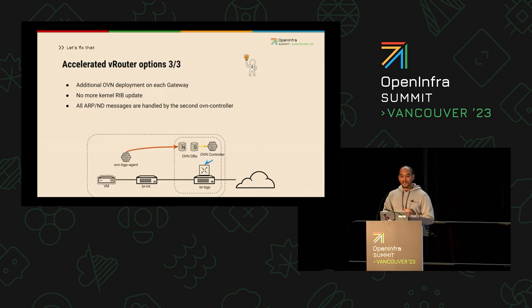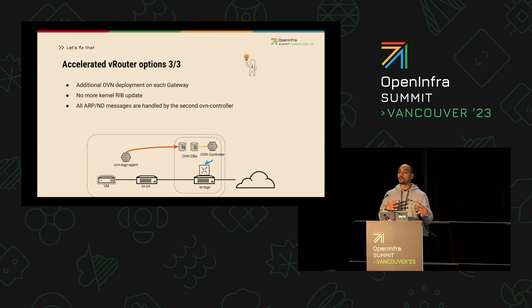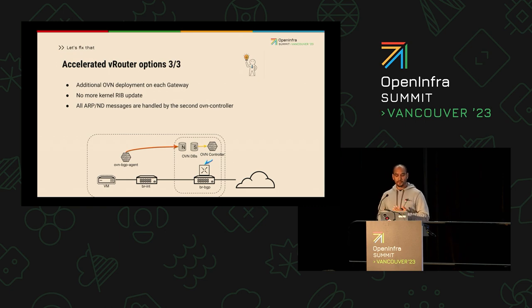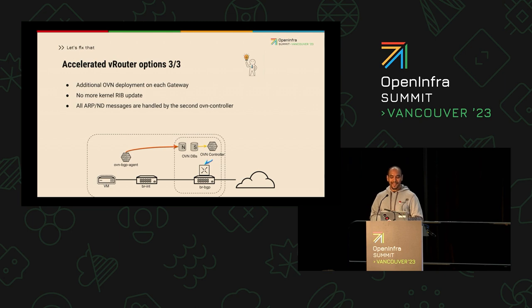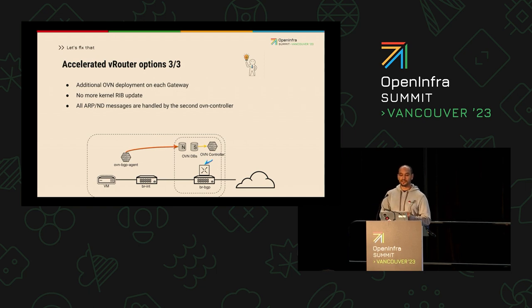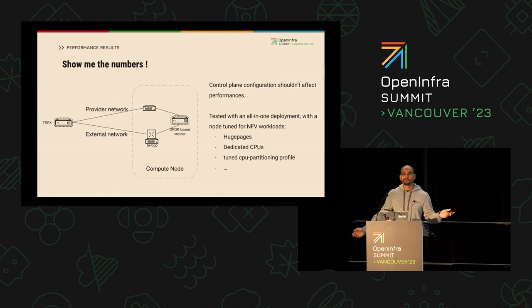The third and final option was: we have one OVN cluster — what if we bring another one? That other one would be extremely small because it would be running locally on each network node. The concept would be exactly the same: OVN BGP agent would just forward the routes locally to that other OVN cluster — a single-node OVN — and that would push the proper routes directly to another bridge. That was the approach taken by Luis.